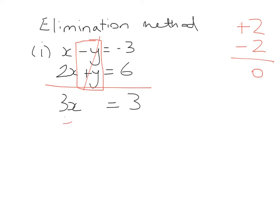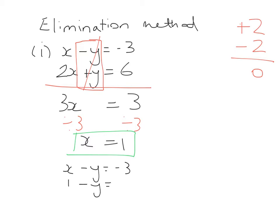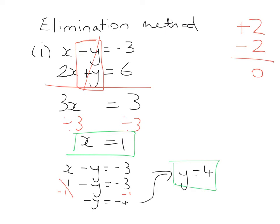Adding the two lines together, the y's cancel. Then x plus 2x gives 3x, and minus 3 plus 6 gives 3. Dividing both sides by 3 gives x equals 1. Next, to find y, substitute x equals 1 back into the first equation: x minus y equals minus 3. Substituting in 1, then subtracting 1 from both sides gives minus y equals minus 4, so y equals 4. As a coordinate, these two lines intersect at point (1, 4) on the graph, but we didn't need to draw it.